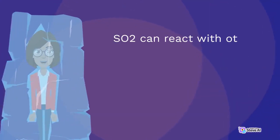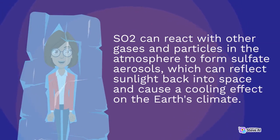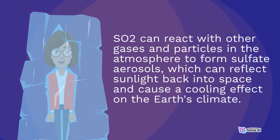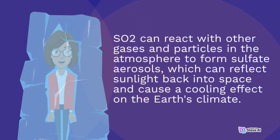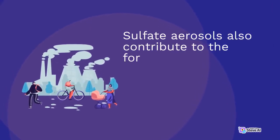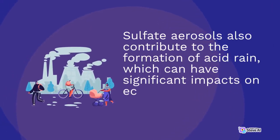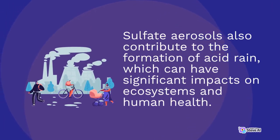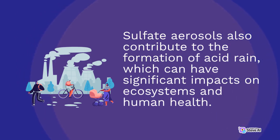Another important reaction in the atmosphere involves sulfur dioxide (SO2), which is emitted from volcanoes, industrial activities, and other sources. SO2 can react with other gases and particles in the atmosphere to form sulfate aerosols, which can reflect sunlight back into space and cause a cooling effect on the earth's climate. Sulfate aerosols also contribute to the formation of acid rain, which can have significant impacts on ecosystems and human health.